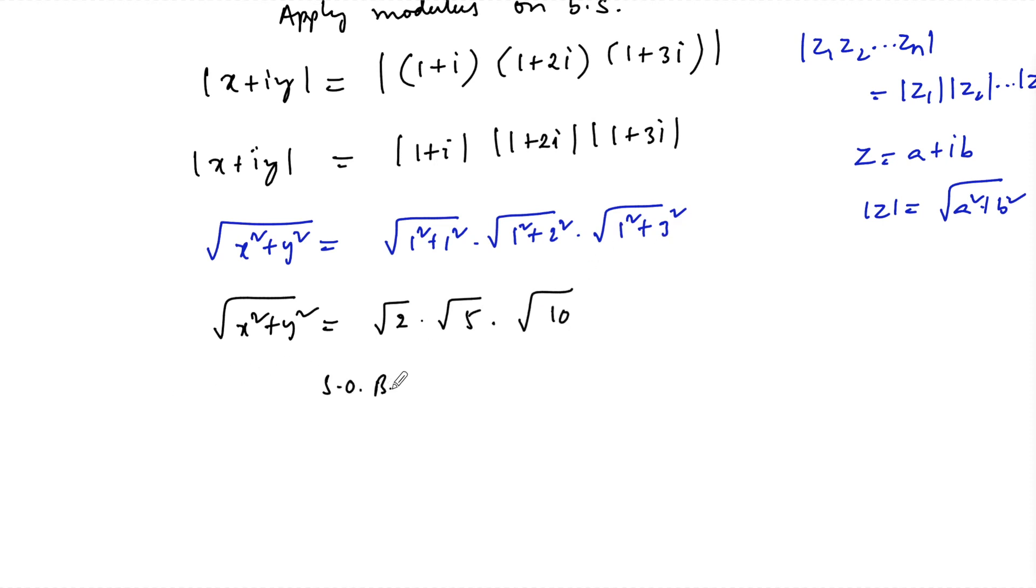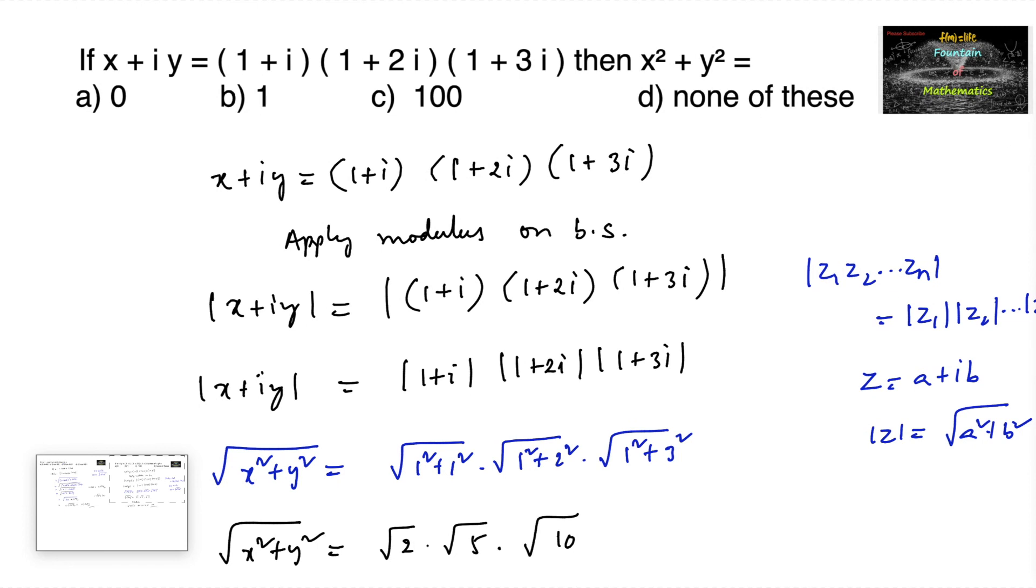On squaring both sides, we can write x square plus y square is equal to 2 into 5 into 10, which is equal to 100. Therefore, x square plus y square equals 100 which is the third option.